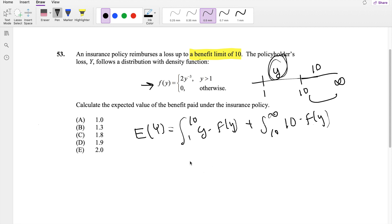So from 1 to 10, I'm just going to take the integral. 2Y to negative 3 times Y is just 2Y to negative 2, plus from 10 to infinity, it is 10 times 2Y to negative 3, DY.